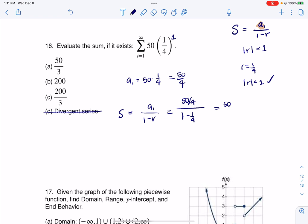So that is 50 over 4. And then if I look at the denominator, 1 minus 1 fourth is 3 fourths. And so I have basically 50 fourths times 4 thirds, that cancels out. That leaves me with 50 thirds, and there's my answer. All right, thanks so much.